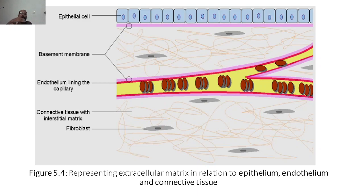Next we have endothelial cells — that means inside, just below the surface, are the endothelial cells. So the main cell types involved are epithelial cells and endothelial cells.